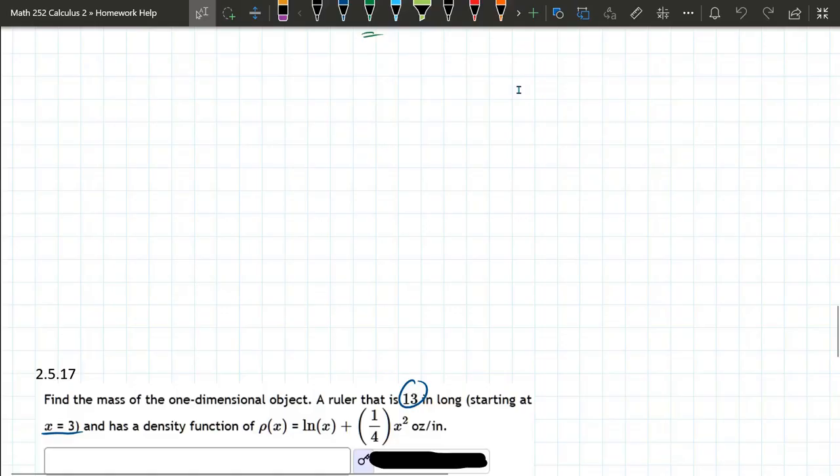In this question, we're going to integrate the density function over the length of the object to get the mass. We have to be a little bit careful because this object is 13 inches long, but it doesn't start at 0. So it does not go 0 to 13. We have to read a little more carefully.